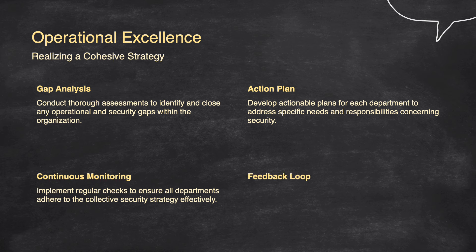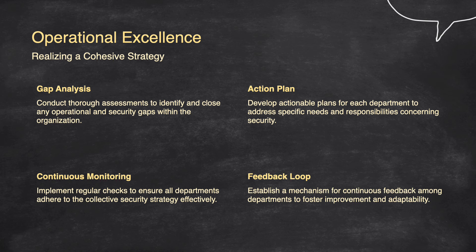To create a continuous feedback loop among departments, use real-time communication tools like messaging apps to encourage open dialogue. Involve employees by regularly gathering their feedback through surveys and check-ins, and analyze this input for trends. Provide two-way feedback where managers also share insights with employees, and foster a culture of continuous learning and improvement. Start with pilot programs to test the process. This approach helps everyone feel heard and supports ongoing growth and adaptability.